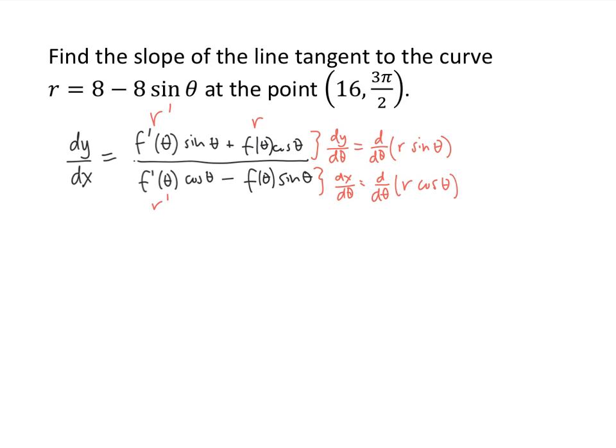If we think of f prime as r prime and f of theta as r, we see that's exactly what we get using the product rule. All you really need to remember is that in parametric equations dy/dx equals the derivative of y divided by the derivative of x, y is r sine theta, and x is r cosine theta. Of course if you can memorize the formula correctly go for it, but this gives you a way to think about the problem without memorizing a very complicated formula.